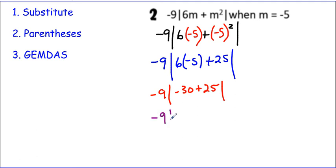Negative 9 times the absolute value of negative 5. So negative 9 times the absolute value of a negative number is a positive number. So negative 45.